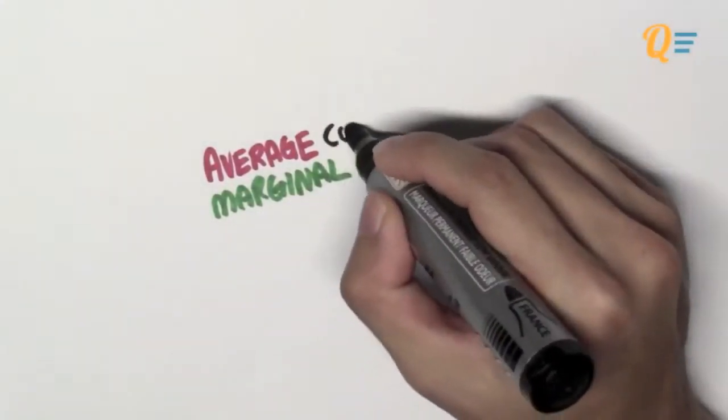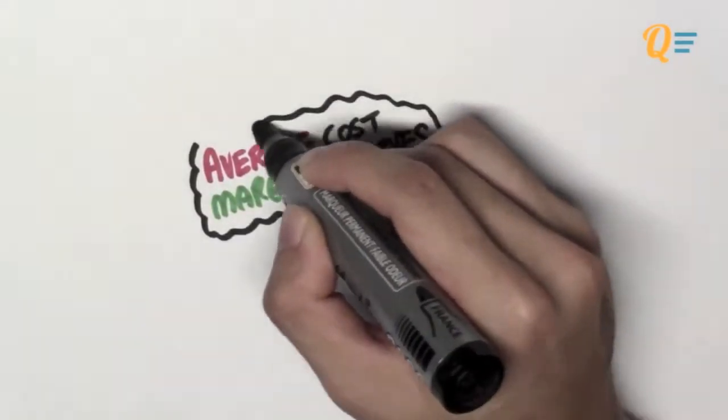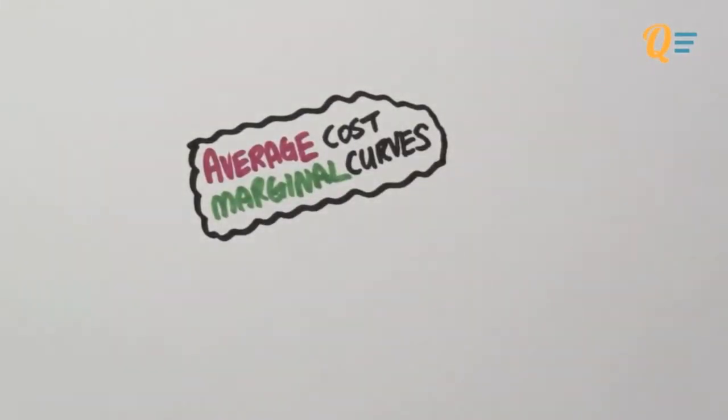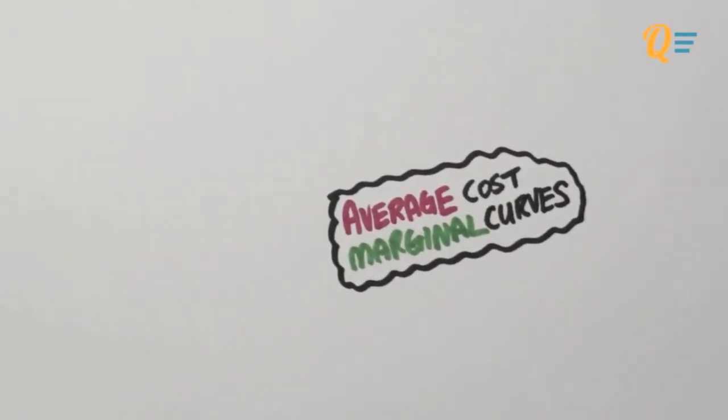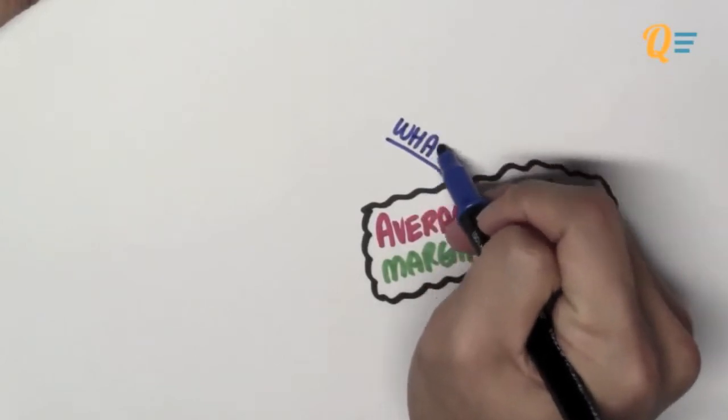Now this video is extremely important because it's going to determine how well you do for chapter 4, which is the chapter on market structures. So you have to pay attention to this video. There won't be much joking around because this is a very key topic.